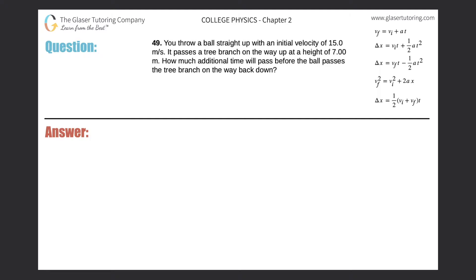Number 49: you throw a ball straight up with an initial velocity of 15 meters per second. It passes a tree branch on the way up at a height of 7 meters. How much additional time will pass before the ball passes the tree branch on the way back down?